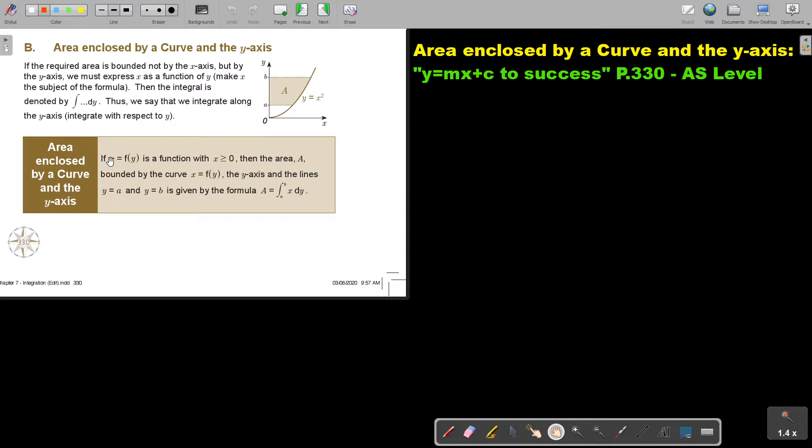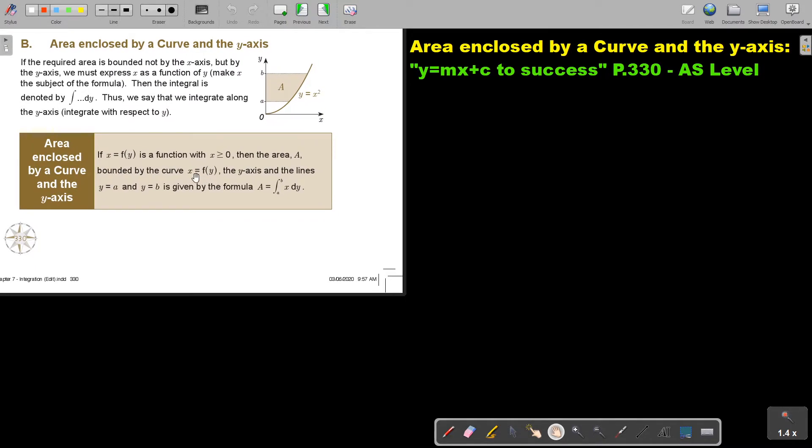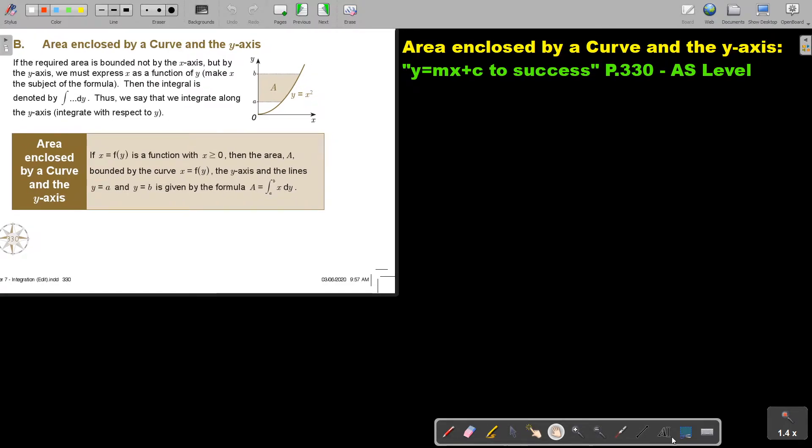So if x equals f(y) is a function with x bigger than 0, then the area A bounded by the curve y equals f(x), the x-axis and the lines y equals a and y equals b is given. So it's exactly the same. The only thing is it's in terms of x, and you integrate to y.